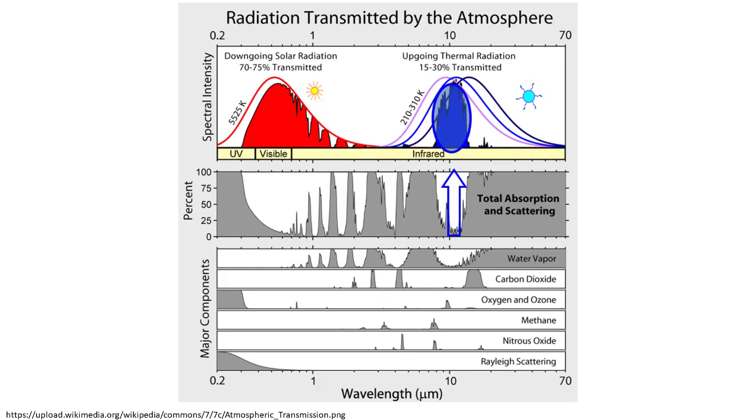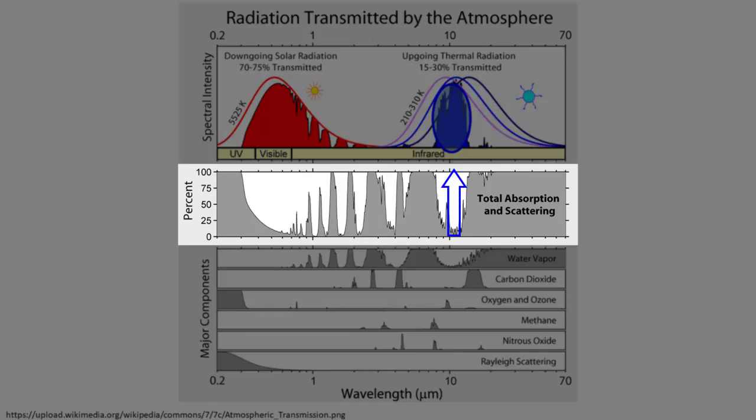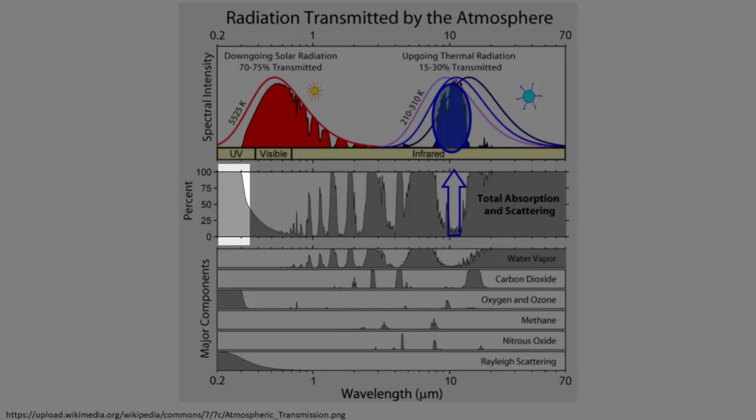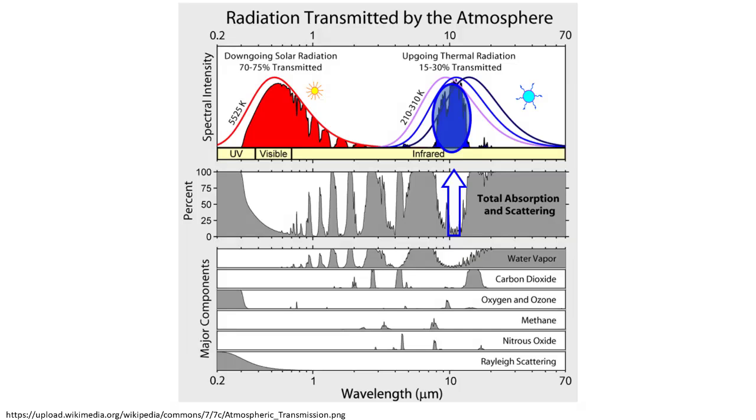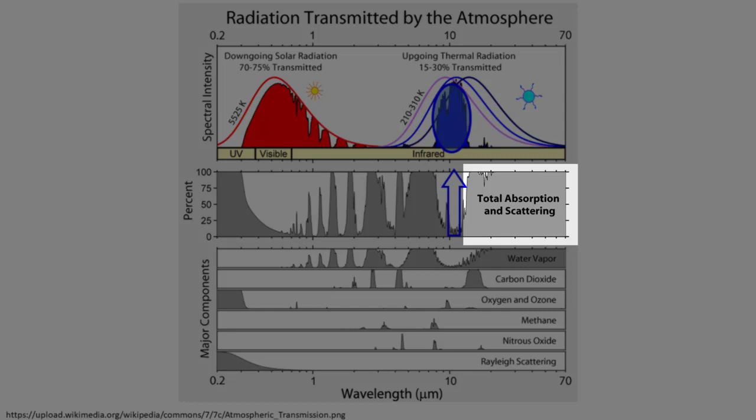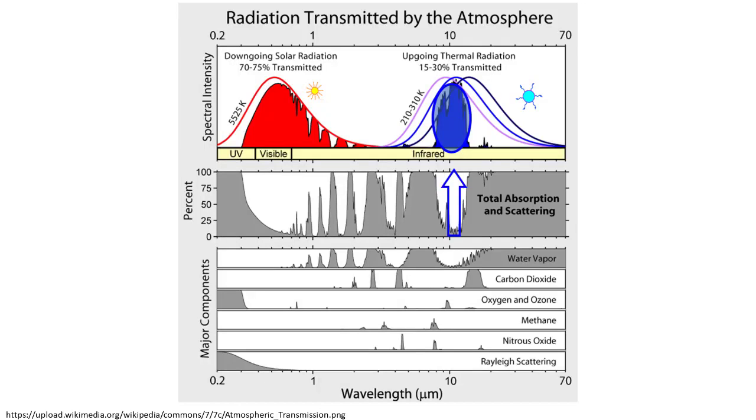In the next panel of this diagram, you can see the total amount of absorption taking place. The very short wave radiation from the Sun is being absorbed, and then most of the very long emitted radiation is being absorbed, with intermittent absorption in between.